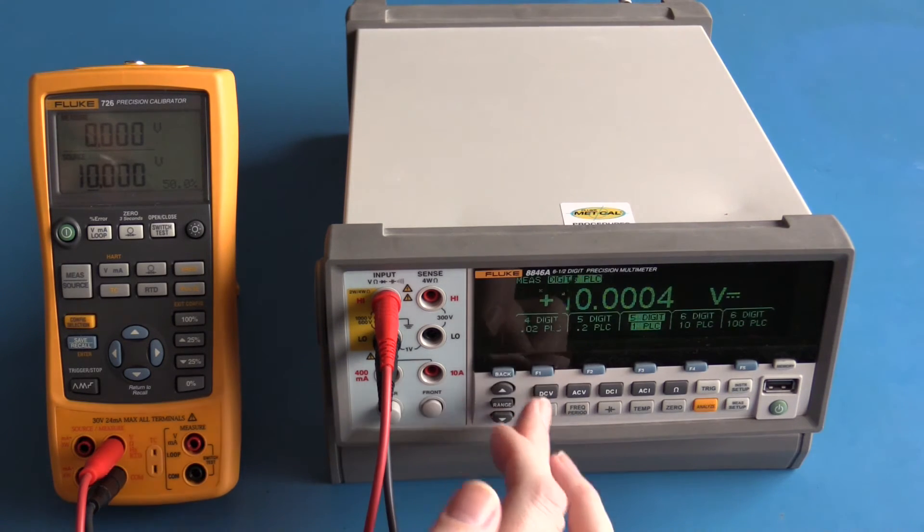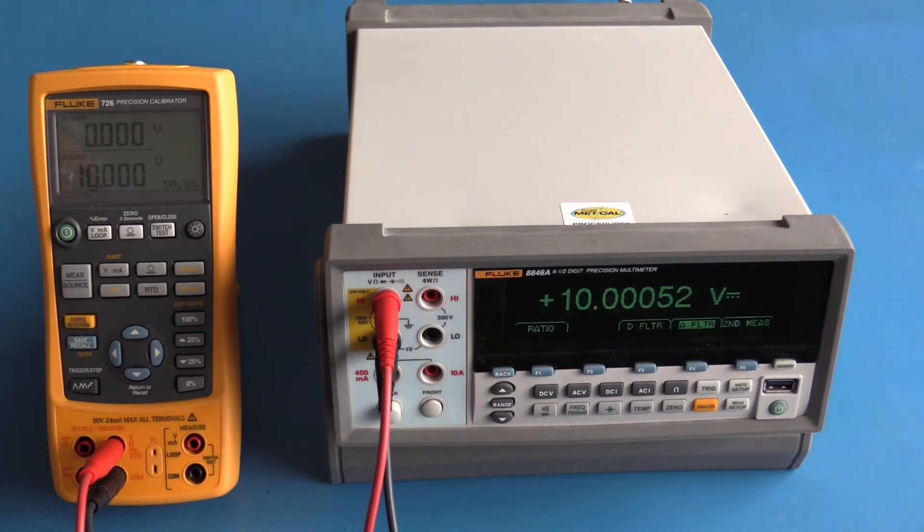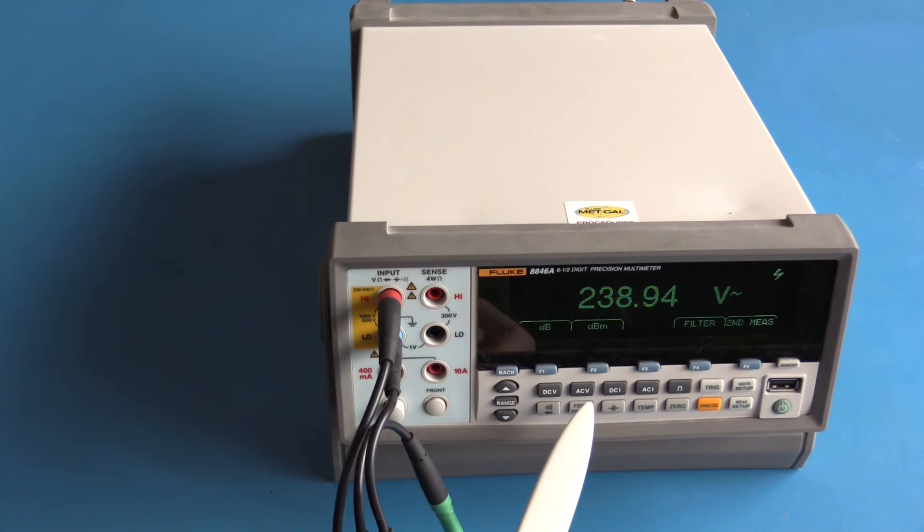I'm now using AC volts. The meter is set up in its medium resolution mode. We have a little warning on the display that a voltage greater than 30 volts is present. We're measuring approximately 240 volts. I'm going to use the second measurement function to look at the line frequency: 240 volts at approximately 50 hertz.